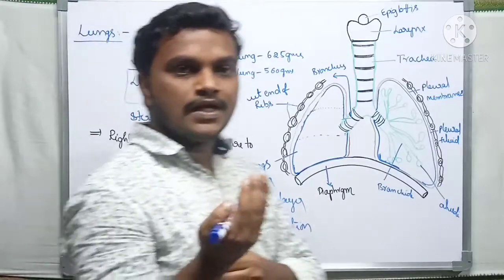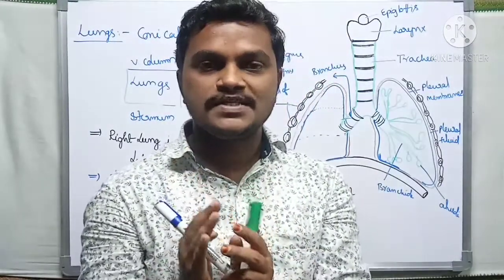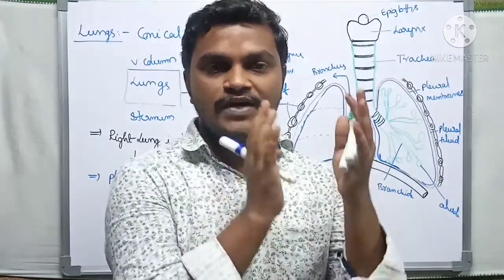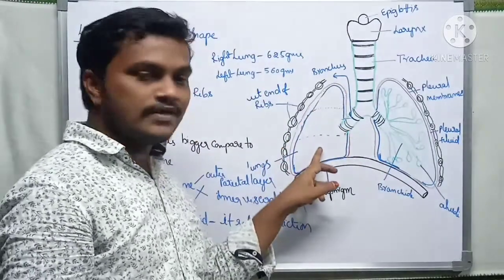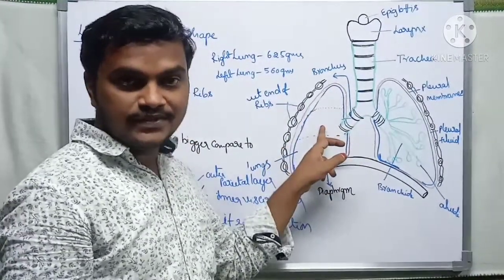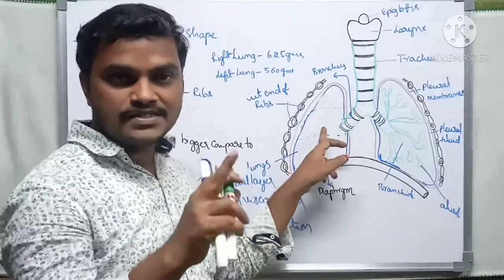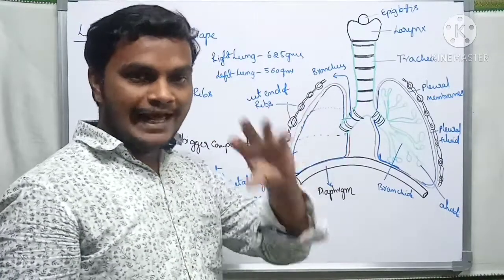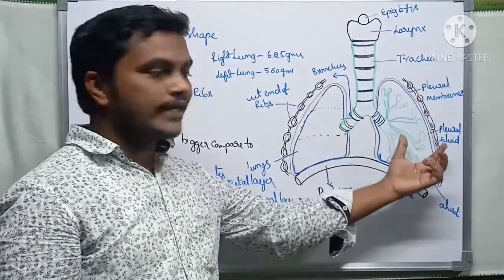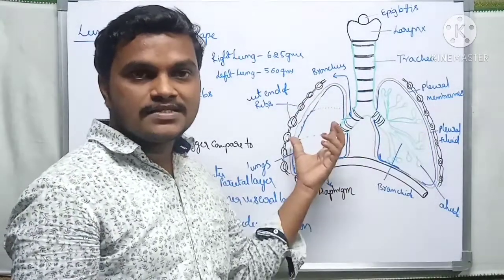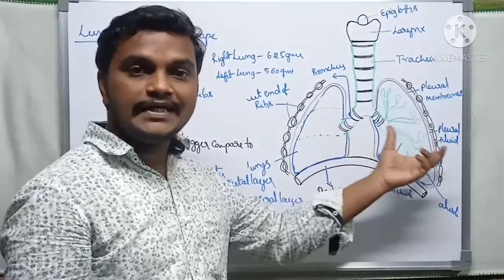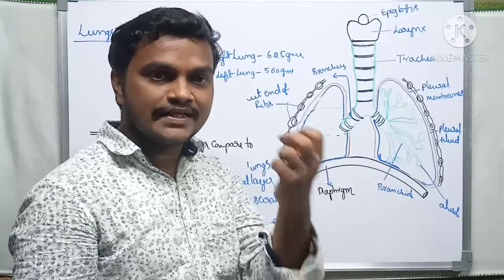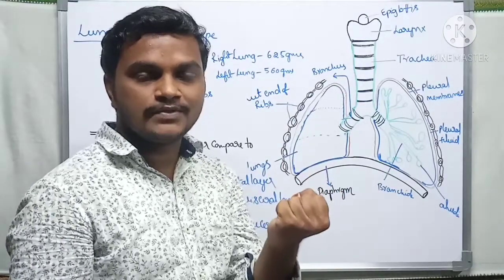These lobes consist of segments, and segments consist of lobules. Those lobules consist of alveoli. There are approximately 700 million alveoli in the lungs. The actual exchange of gases takes place in the alveoli.